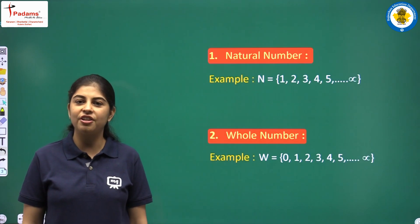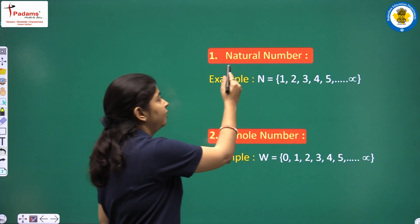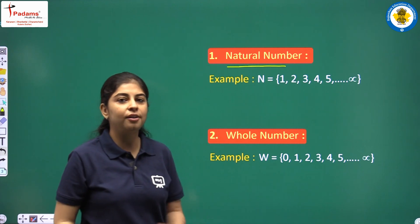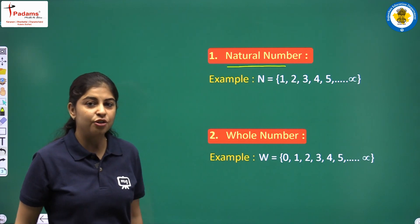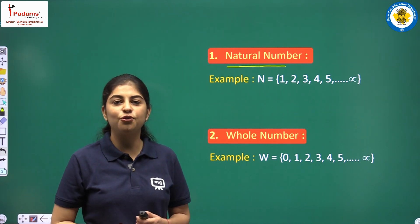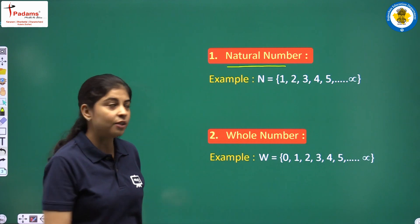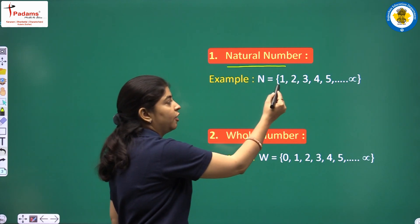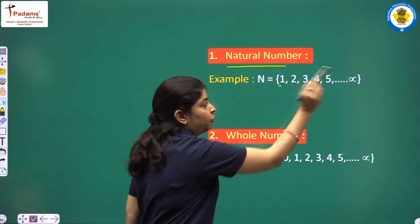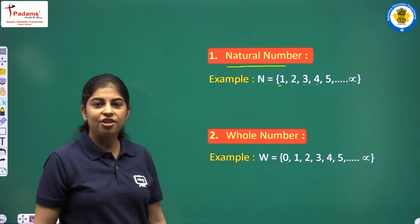Our first definition is of natural numbers. What are natural numbers? Natural numbers are those numbers that are used for counting, and this starts with 1: 1, 2, 3, 4, 5, and up to infinity.